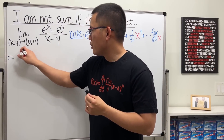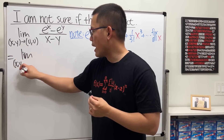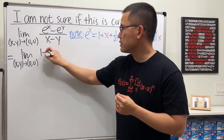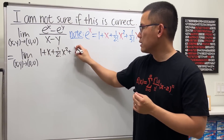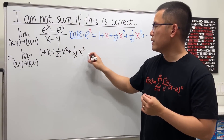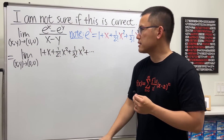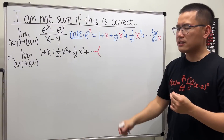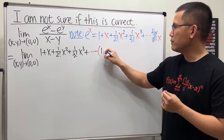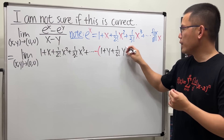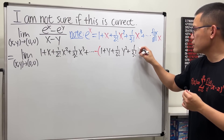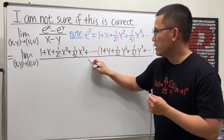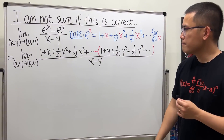So let's see what we can do. We have the limit as (x, y) approaches (0, 0). The power series expansion for e to the x is written out, and we subtract the power series for e to the y — which is the same but with all x's replaced by y's — giving 1 plus y plus one over two factorial times y squared, and so on. All of this is divided by x minus y.